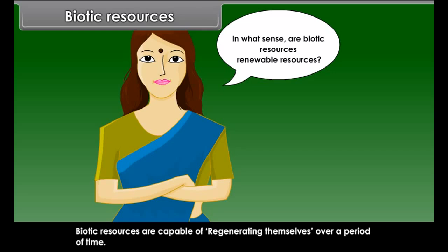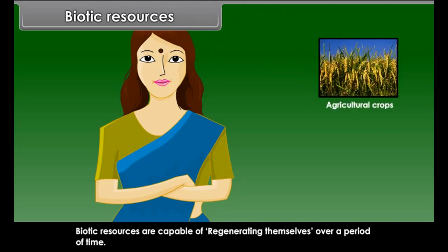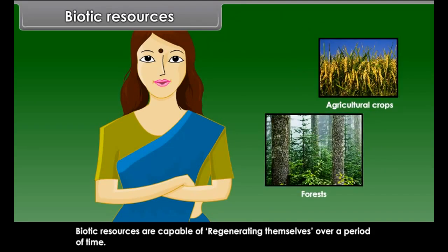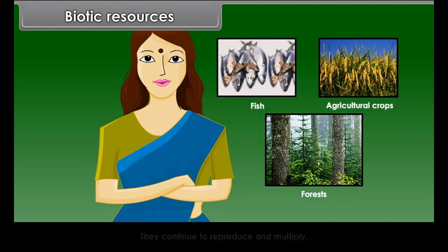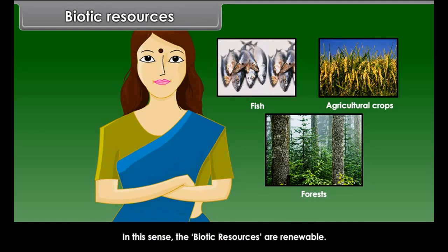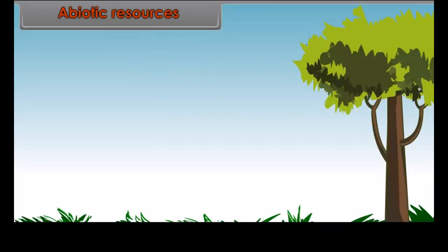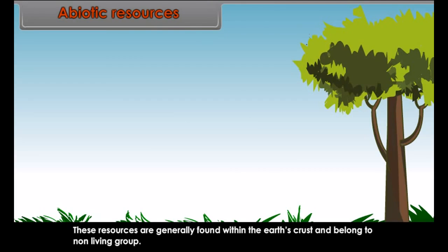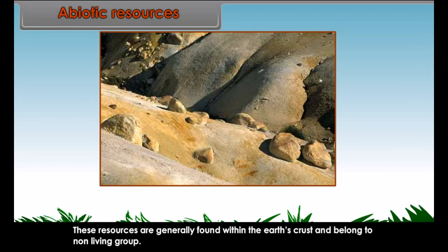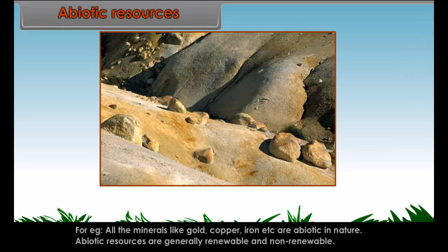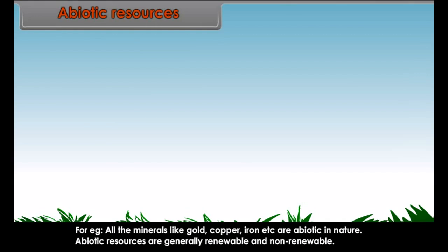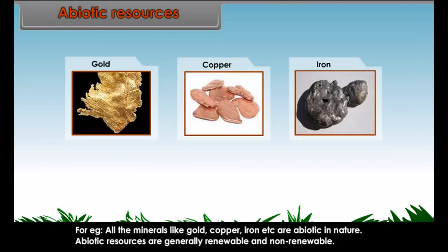In what sense are biotic resources renewable resources? Biotic resources are capable of regenerating themselves over a period of time. For example, agricultural crops, forests, fish, etc. — they continue to reproduce and multiply. In this sense, biotic resources are renewable.